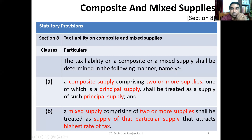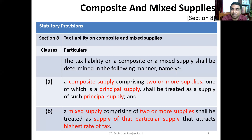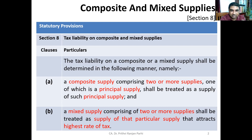We have already covered Section 7, which deals with the meaning of supply, and we will be revisiting that section. Now let us look at Section 8 of the GST Act, which talks about how tax will be levied on composite supply. We'll first see how tax will be levied, then we'll try to understand the meaning of these two things.